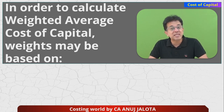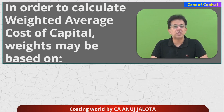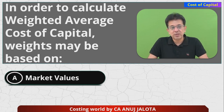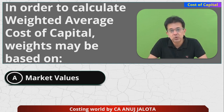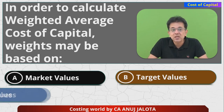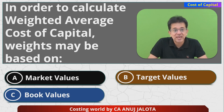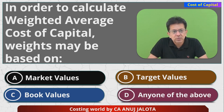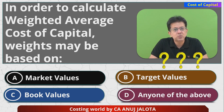So let's start with today's MCQ. In order to calculate WACC — weighted average cost of capital, also called as ko (some people also denote it as kc) — weights may be based on: A) market value, B) target values, C) book values, and D) any of the above. I guess you will be knowing the answer, so please think about it.